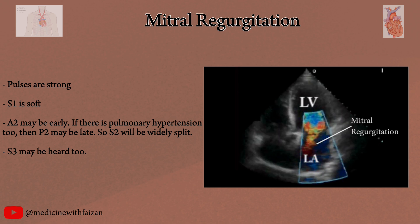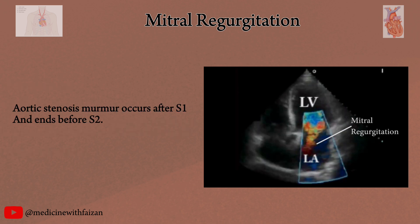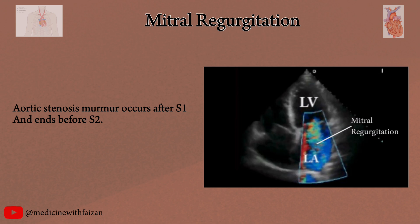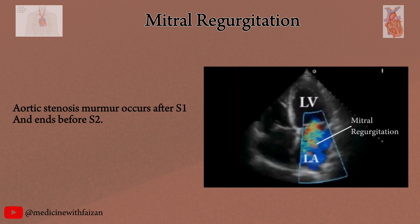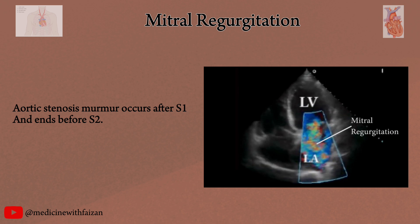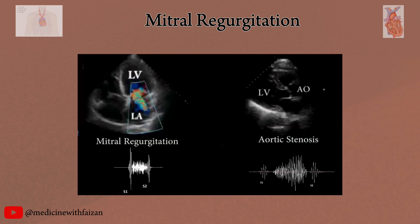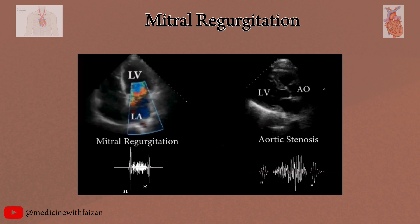S3 may be heard and felt due to increased diastolic flow rate. Also, the murmur of aortic stenosis cannot be holosystolic, as the aortic valve does not open with S1. The murmur of aortic stenosis occurs after S1 and ends well before S2. Compare the murmur and echocardiogram of MR with that of aortic stenosis.